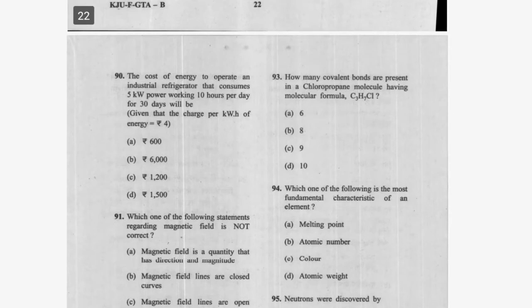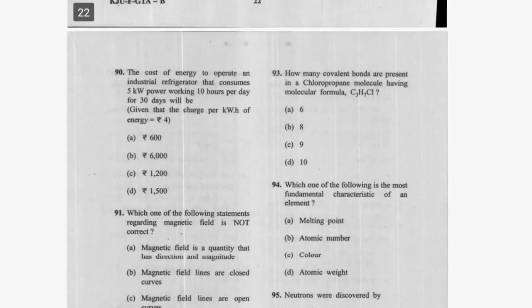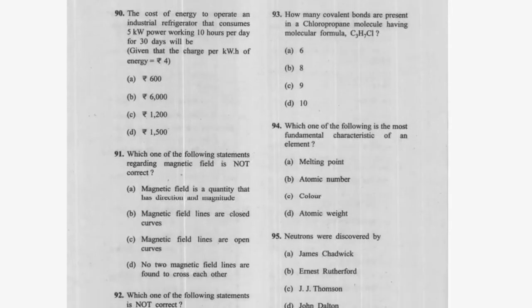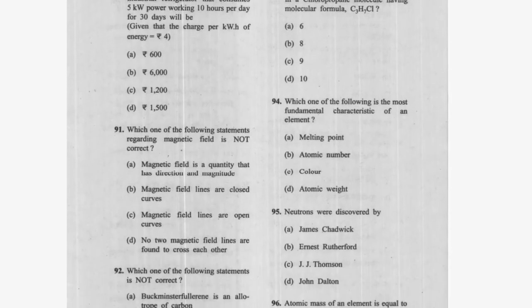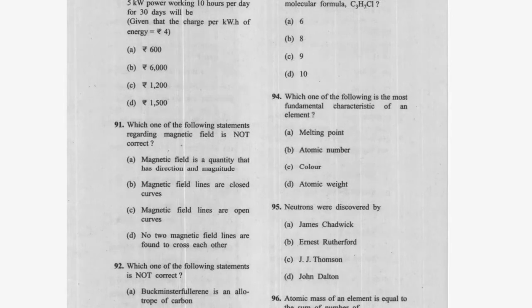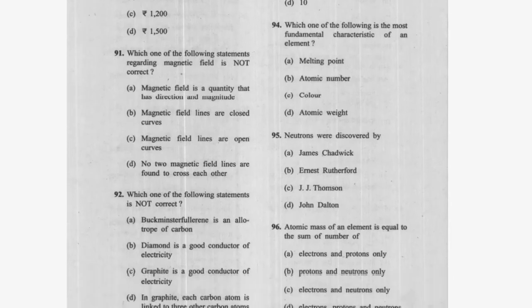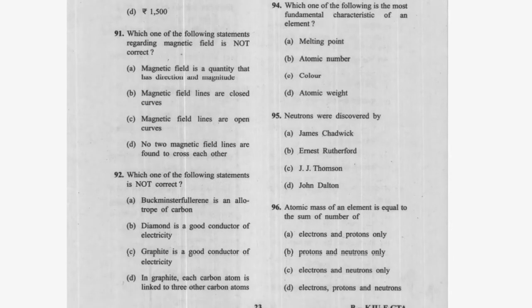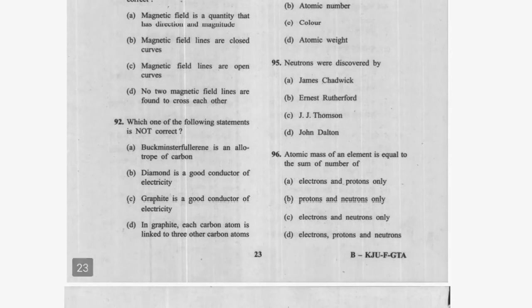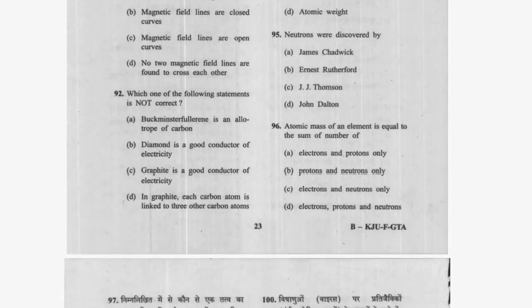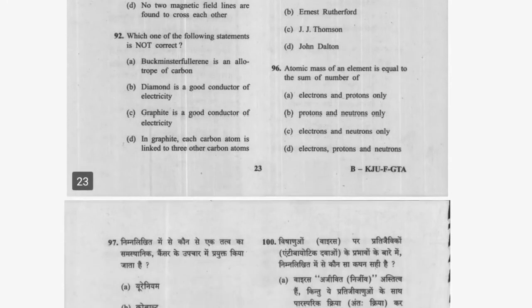Question 90: How many covalent bonds are present in a chloropropane molecule? The answer is 10 — option B is correct. Question 91: What is the most fundamental characteristic of an element? Atomic number — option B. Question 92: Neutrons were discovered by Chadwick. Question 93: Atomic mass of an element equals the sum of the number of protons and neutrons — option B is correct.